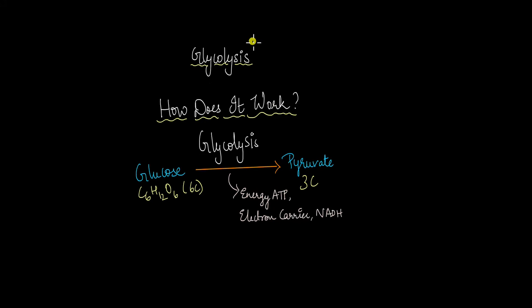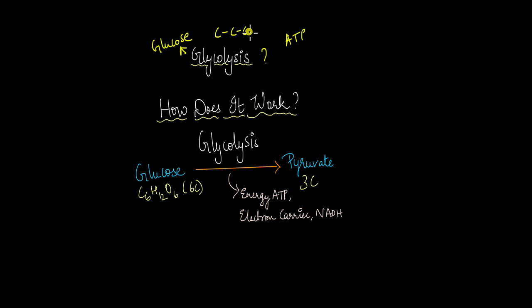The first process that comes to mind when we talk about ATP production in cells is glycolysis. Glycolysis is quite literally the splitting up of glucose — glyco stands for glucose and lysis means splitting up. Glucose, being a 6-carbon compound, is split into two 3-carbon compounds called pyruvate or pyruvic acid. In the process, energy in the form of ATP and electron carriers or NADH are also produced.